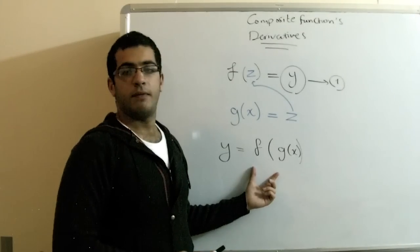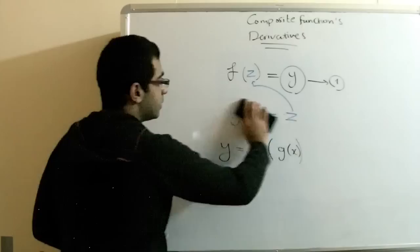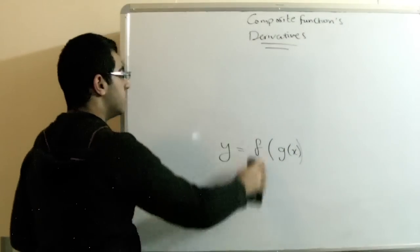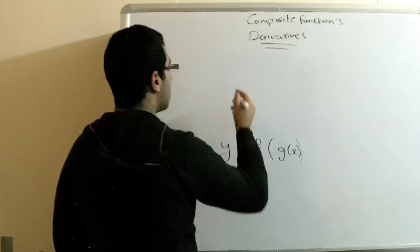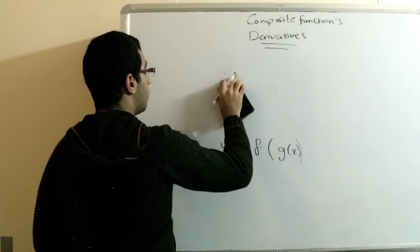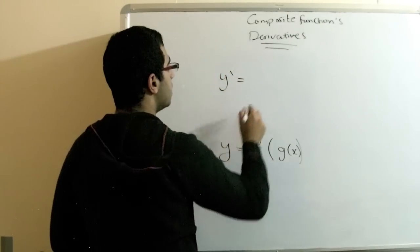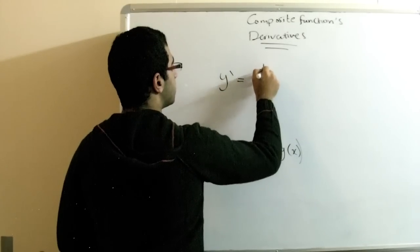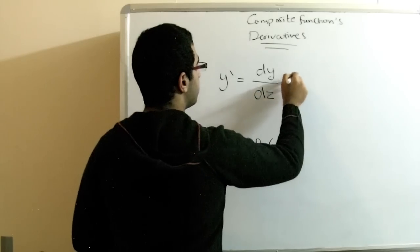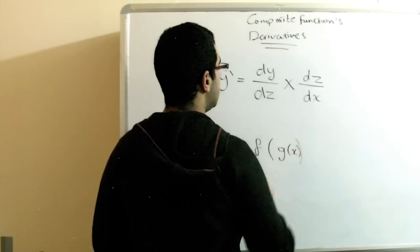If we want to get the derivative of this function, what shall we do? Simply, if we want to get y', what we will do is multiply dy over dz by dz over dx.